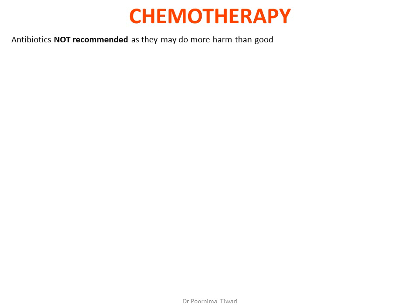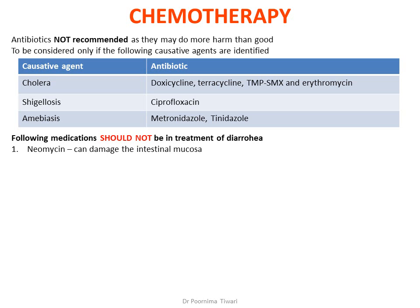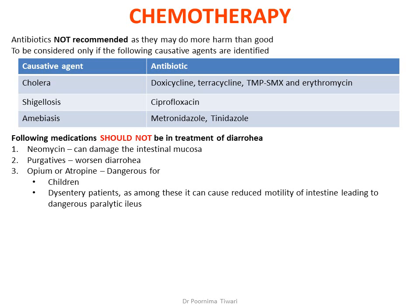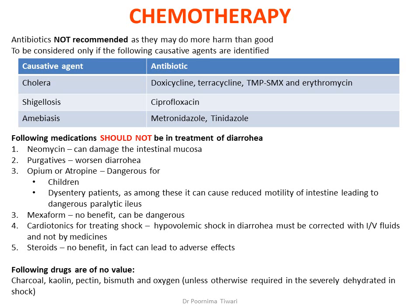Is chemotherapy indicated? Antibiotics are generally not recommended as they may do more harm than good, but can be considered if specific pathogens have been identified as the cause of diarrhea. The following medications should never be used: neomycin, purgatives (which worsen diarrhea), opium or atropine (dangerous in children and in dysentery, as they decrease gut motility without curing diarrhea, leading to dangerous paralytic ileus), Maxoform, loperamide, and cardiotronics for shock. Shock in diarrhea is due to hypovolemia and must be corrected with IV fluids only, not medicines. Steroids are not indicated at all.